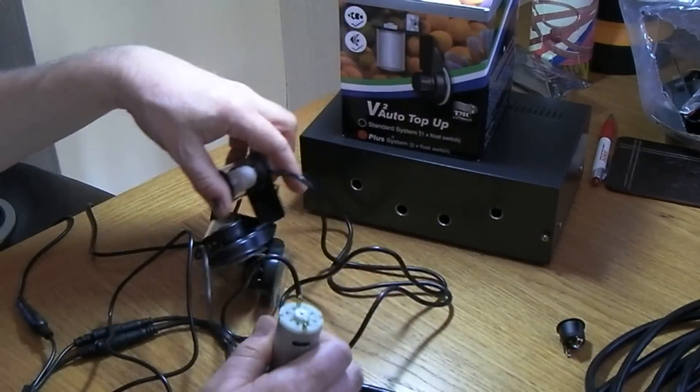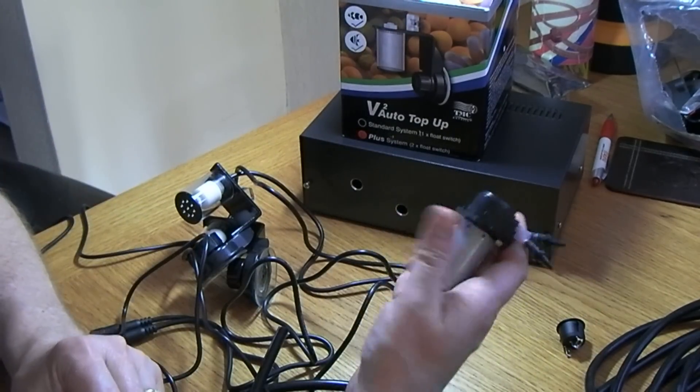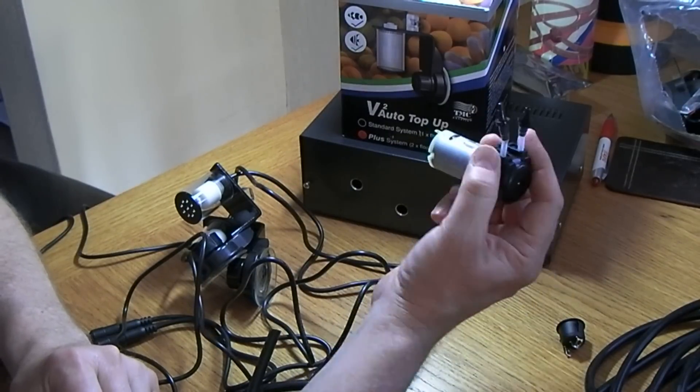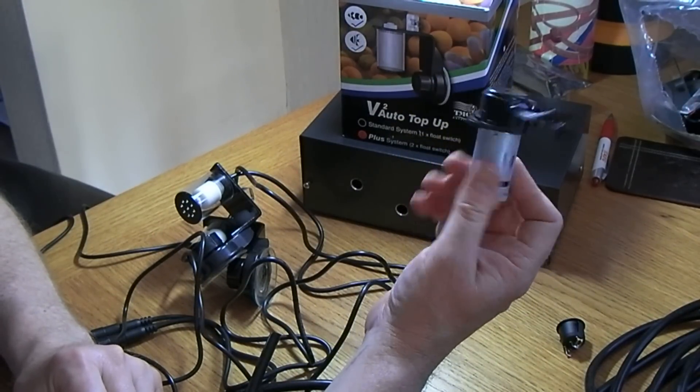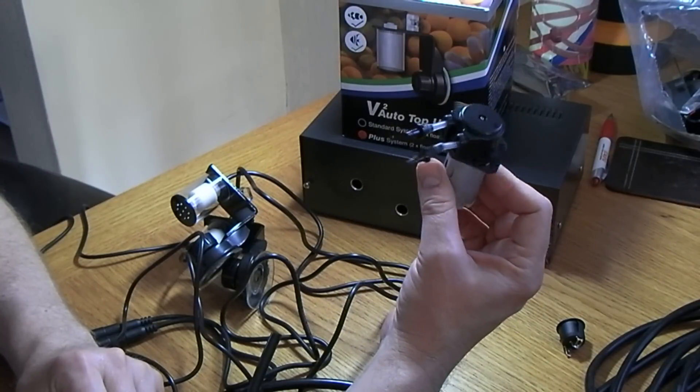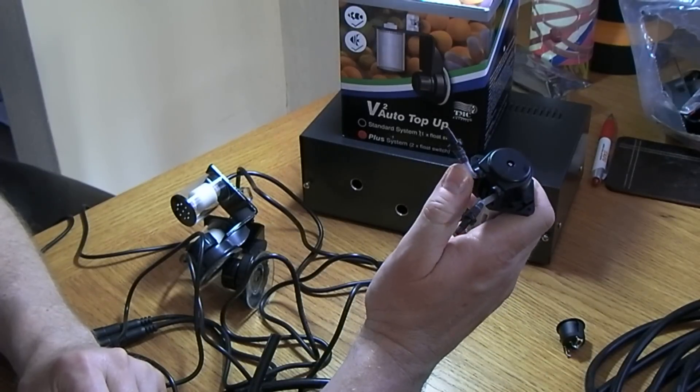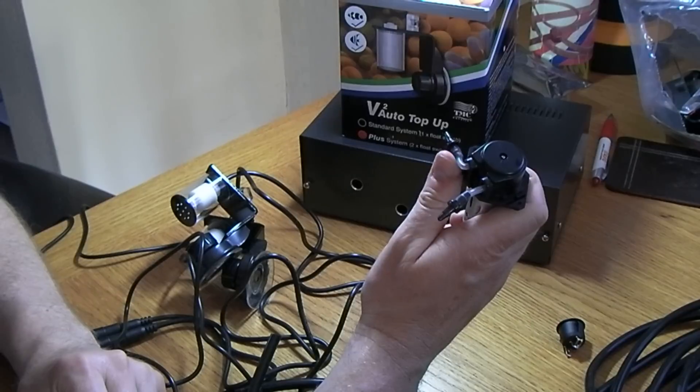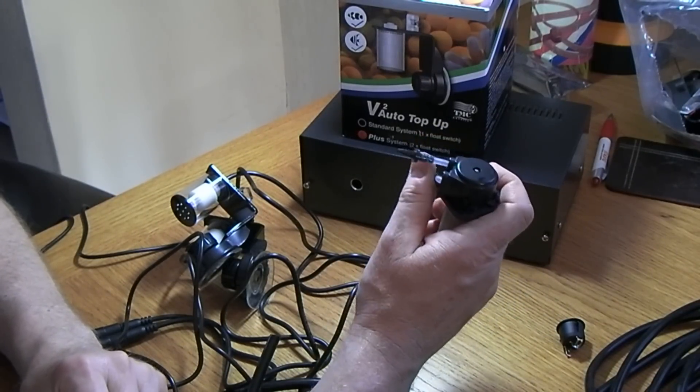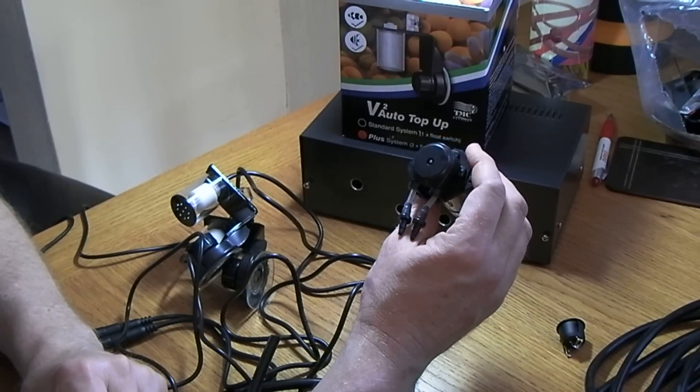On the other side I'll have another one of these just in here. This one will be on a timer. Again, I can override it with the switch if required, but this will be on a timer and will dose some carbonate during the night when the pH drops a little bit.